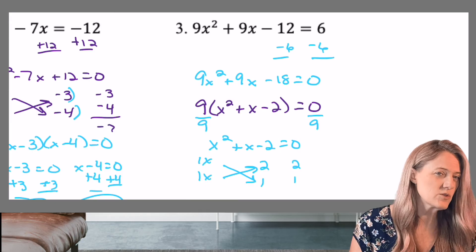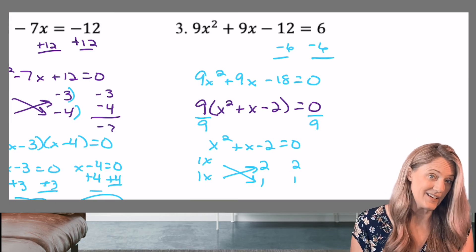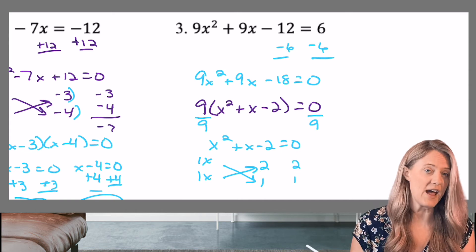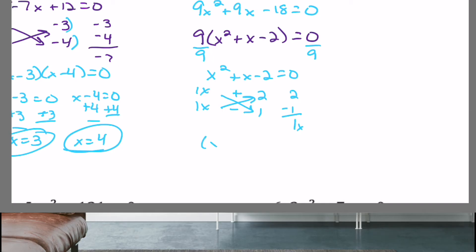Remember how to choose which one is the negative factor? Well, B is positive. So that means I want the bigger factor to be positive. So I need the two to be plus and the one to be minus.